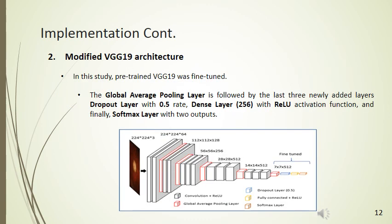The second architecture is VGG-19. In this experiment, a pre-trained VGG-19 was fine-tuned. As the modification, the global average pooling layer is followed by three newly added layers: a dropout layer with 0.5 rate, a dense layer with ReLU activation function, and finally a softmax layer with two outputs.